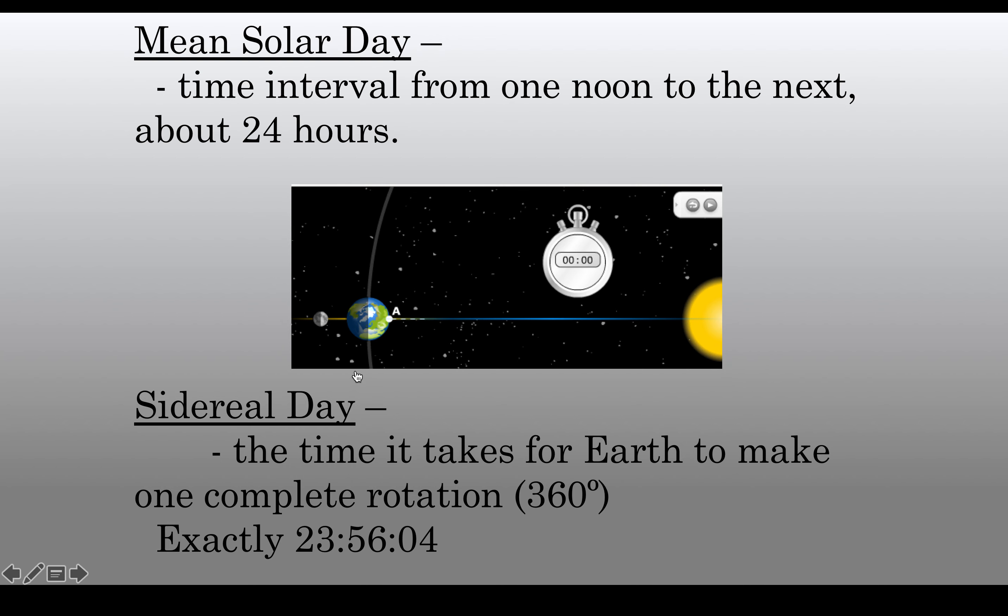Now, as we revolve and rotate on our axis, we get a year and we get a day. A mean solar day is the time from one noon to the next, and that is based on rotation. That is based on when we see a fixed point right here, and then the Earth makes one full rotation back to that fixed point. Now, that is about 24 hours, and that's what we consider the mean solar day.